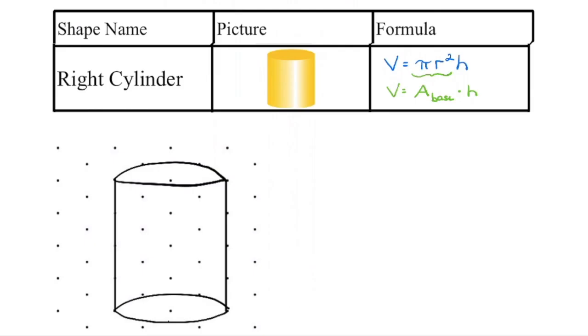The right cylinder is very similar where we're looking at how many cubic units are going to fit along the base and then how many layers are we going to have. So we're taking the area of the base, because it's a circle we can find the area by going πr² and then we're multiplying it by the height.